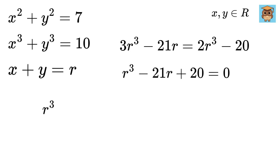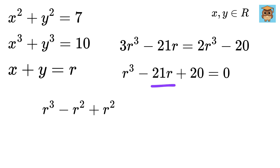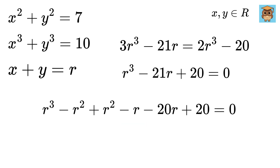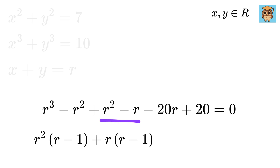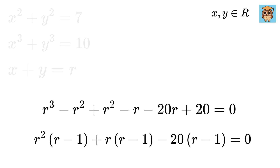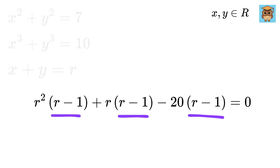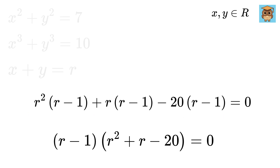Now write the equation as r cubed minus r squared plus r squared minus r minus 20r plus 20 equals 0. Take r squared common from the first two terms giving r squared times r minus 1, then take r common from the next two giving r times r minus 1, and take minus 20 common from the last two giving minus 20 times r minus 1.